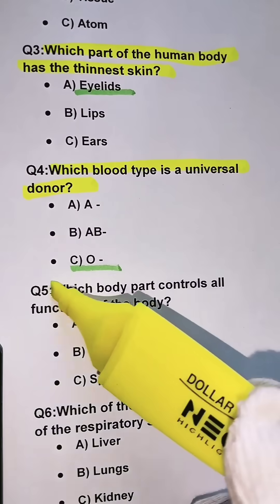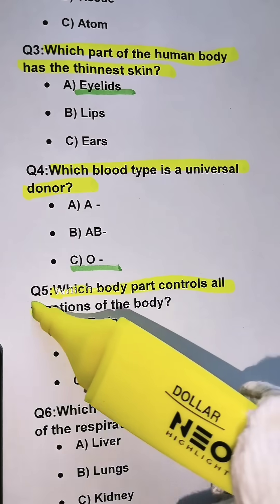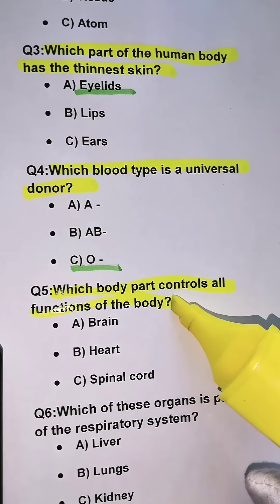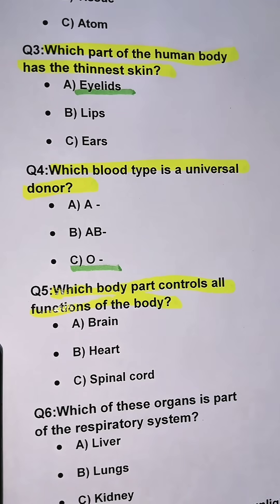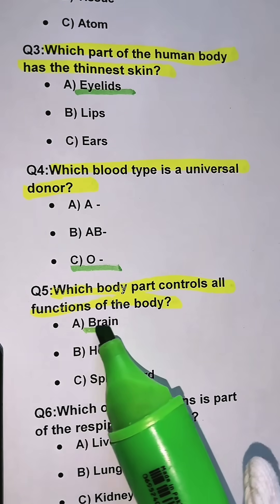Question 5. Which body part controls all actions of the body? Option A. Brain.